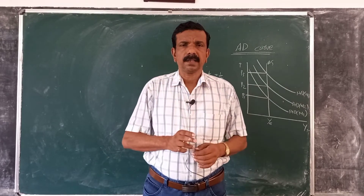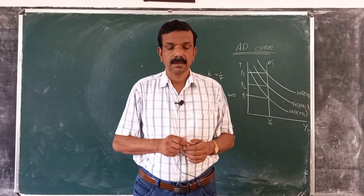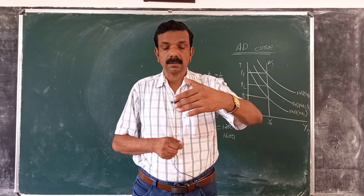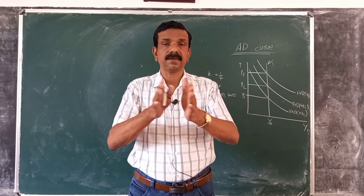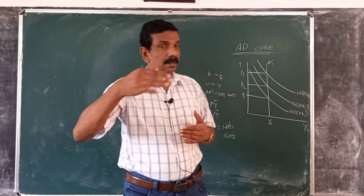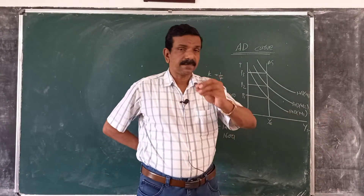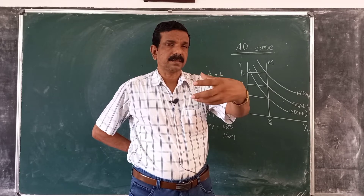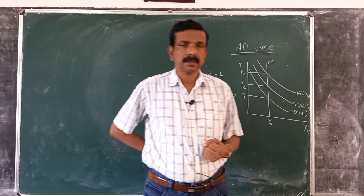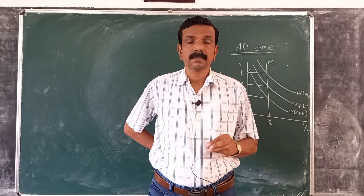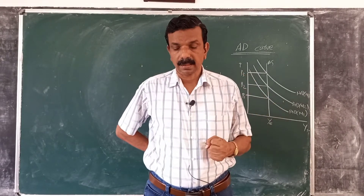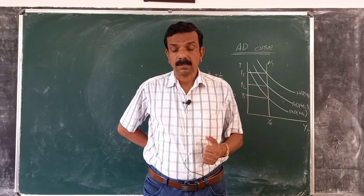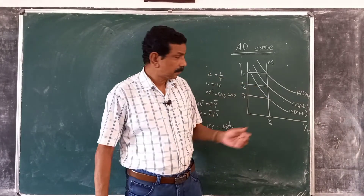The classical theory of aggregate demand is an implicit theory. It is not explicit in the sense that it does not focus on the components of aggregate demand. In Keynesian theory, aggregate demand is explicit because Keynesian theory focuses attention on the factors and components of aggregate demand. The classical theory of aggregate demand is implicit as it does not focus attention on the components of aggregate demand — this is a point to be remembered.